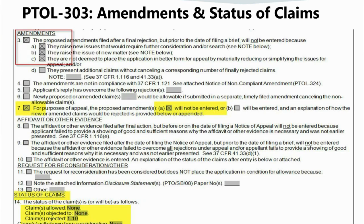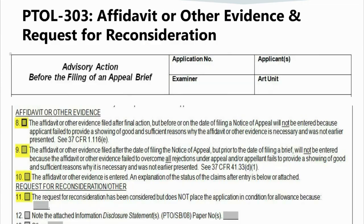Instead, box 7 is completed to indicate that the proposed amendment is entered. Regardless of whether or not the proposed amendment will be entered, the status of the claims should be indicated in the section titled 'Status of the Claims.' If applicant's reply includes an affidavit or other evidence, check the appropriate boxes in the section entitled 'Affidavit or Other Evidence' to indicate entry or non-entry. Any arguments set forth by applicant are addressed in the section entitled 'Request for Reconsideration/Other.'